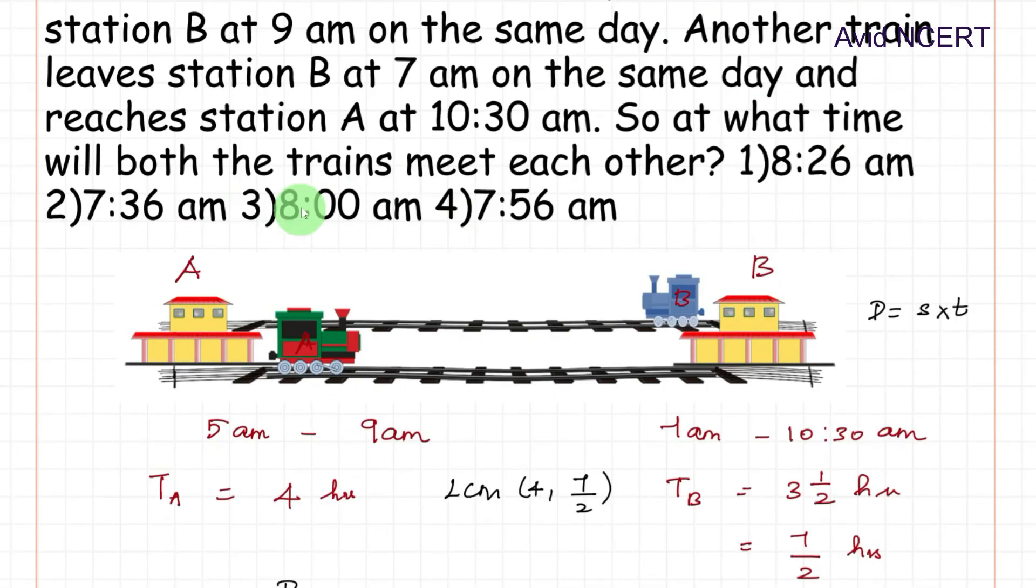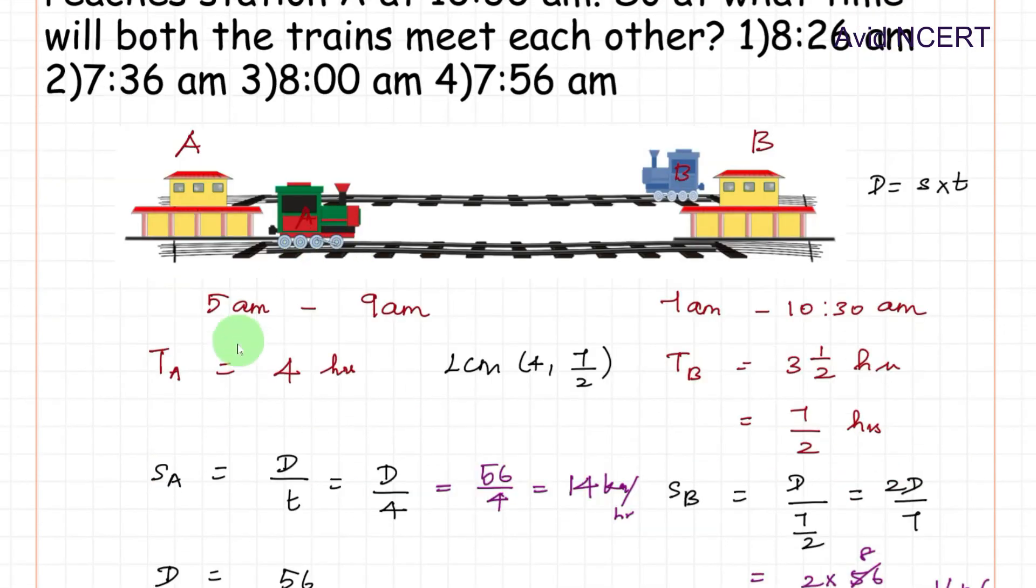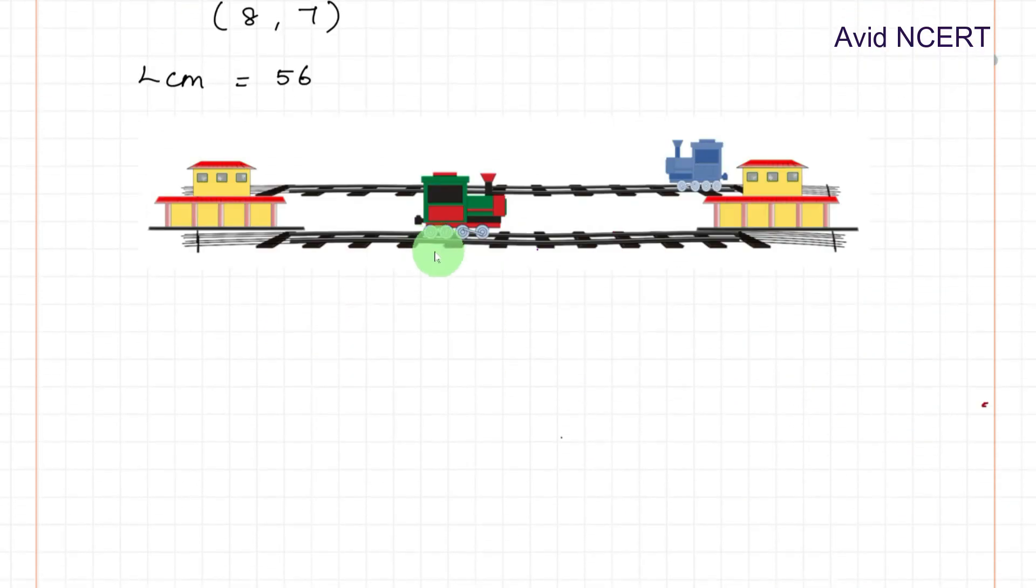Now we need to find the meeting time. Since train A has started at 5 a.m whereas train B has started only by 7 a.m, by 2 hours, like 5 to 7 is 2 hours, it would have reached half the distance already. Train A started at 5 a.m and reaches at 9 a.m, whereas train B starts at 7 a.m. The total time taken by train A is 4 hours, so in 2 hours it would have reached half the distance.